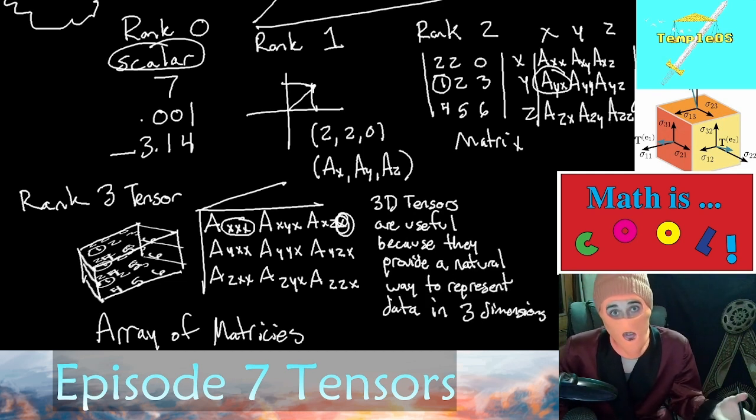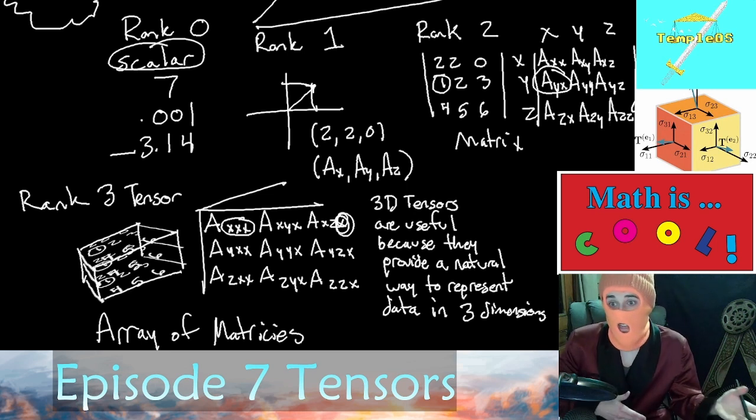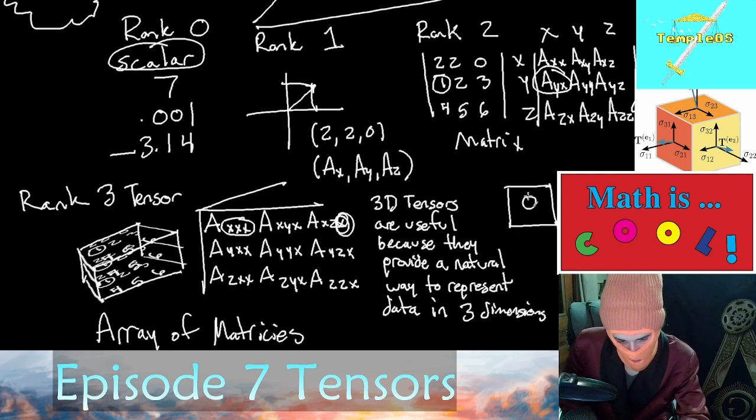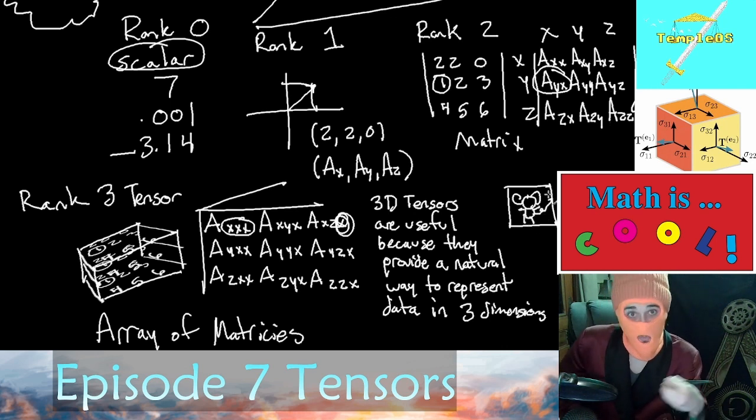3D tensors are particularly useful because they provide a very natural way to represent data in a three dimensional way. What's an example of that? Let's say we have a picture of a little puppy. Well, I've accidentally drawn a monkey, but the point still stands. With an image, we have a height, a width, and there is actually a third dimension here, which is the color value of each one of these pixels. So every pixel has an R, G, and a B which comprises the color.